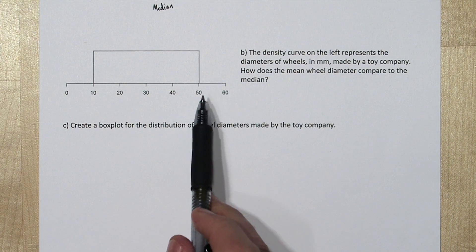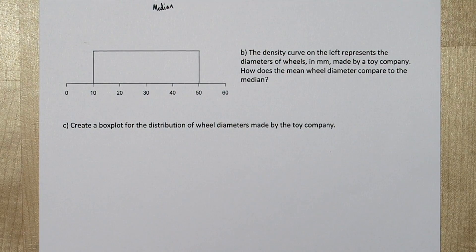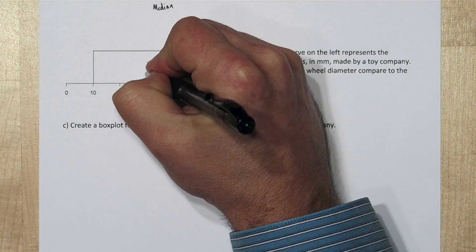Now on this density curve there's no skew at all. This is called the uniform distribution. And since it's uniform and it's symmetric, the mean and the median are actually both going to be right in the center.